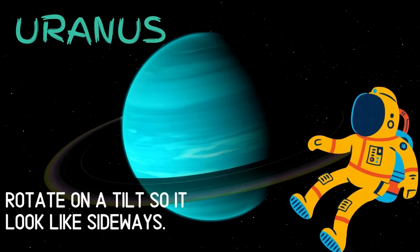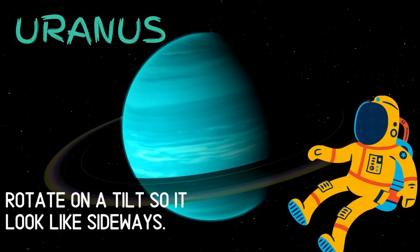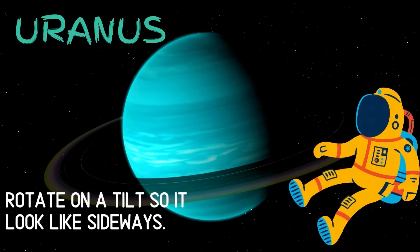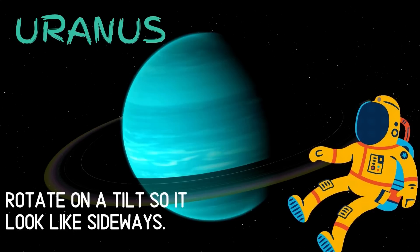Uranus is the seventh planet from the sun and the third largest planet of the solar system. The Earth is rotated on a tilt so it looks like a sideways planet.